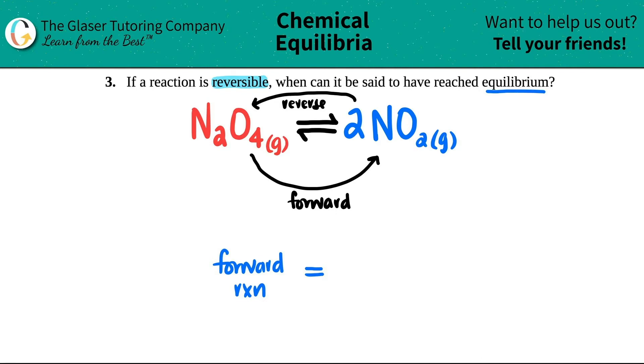So, the forward reaction has to equal the reverse reaction in some way, and RxN is reaction. So, RxN. But now, what is equal from the forward reaction to the reverse reaction?